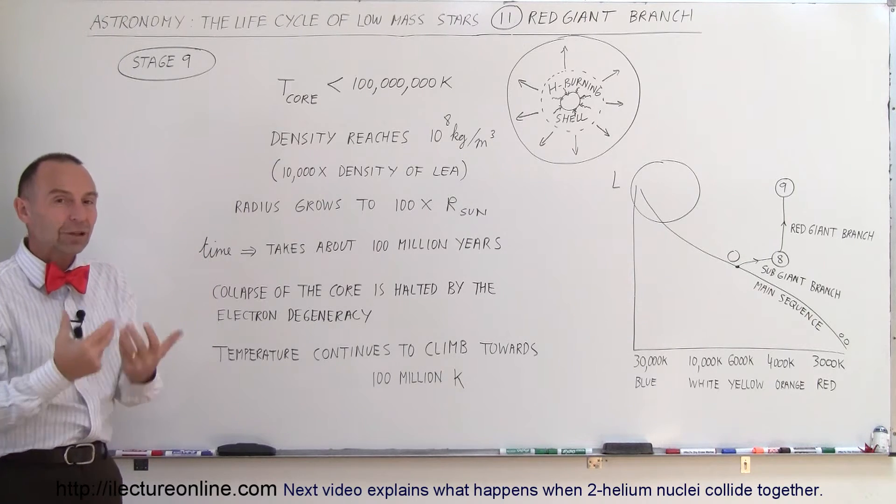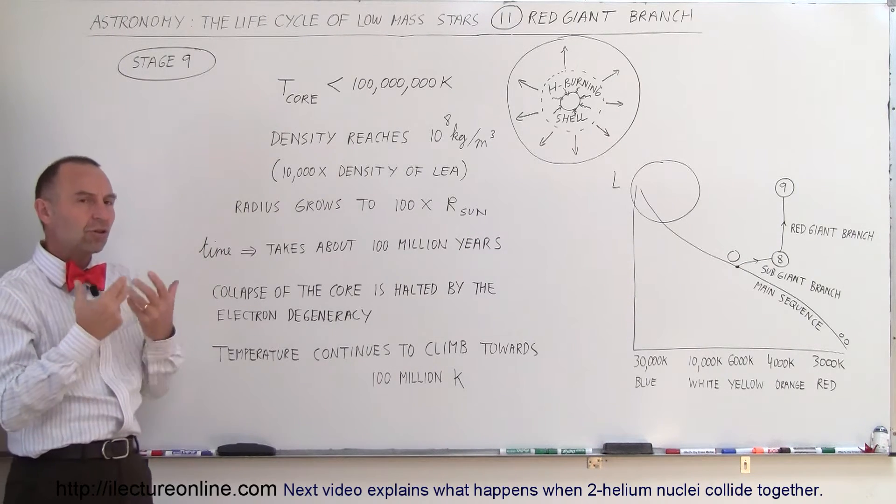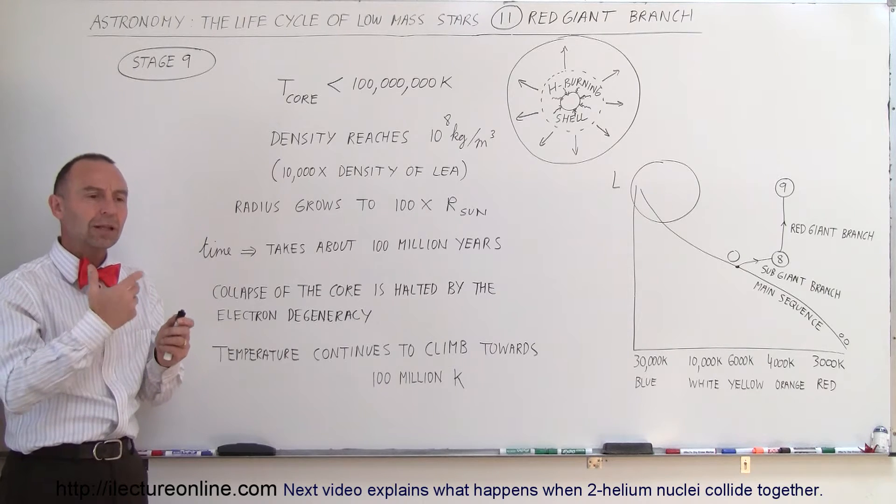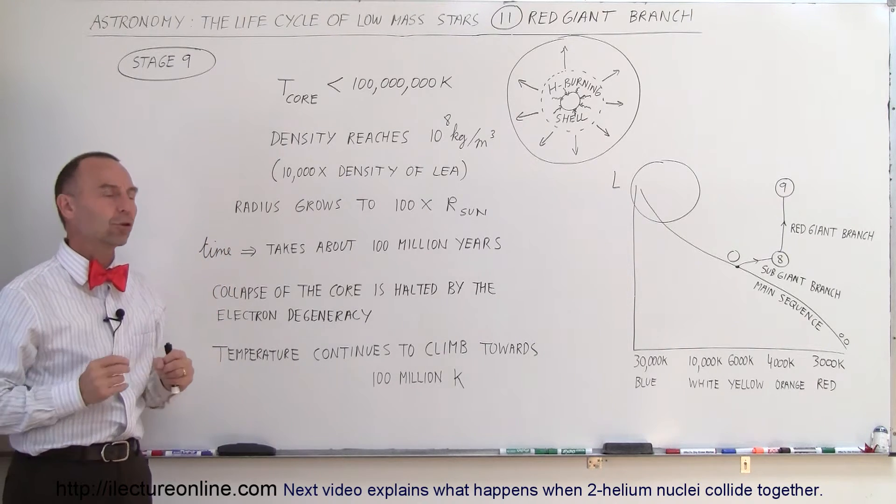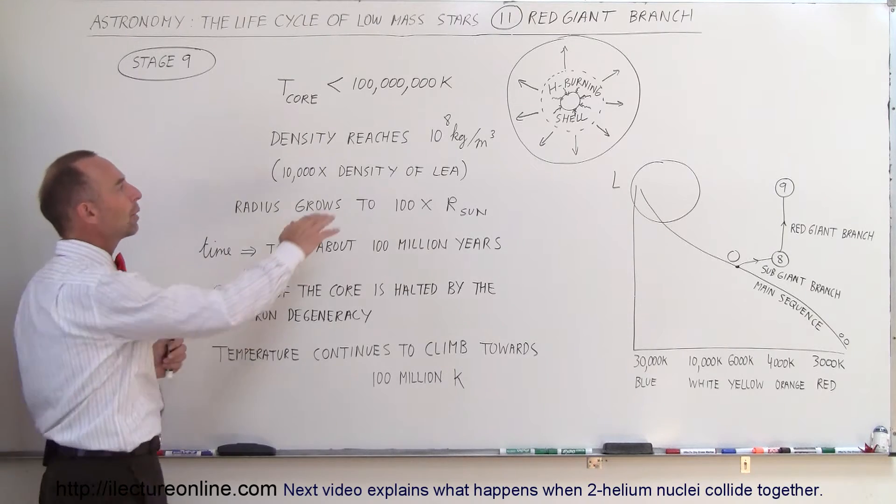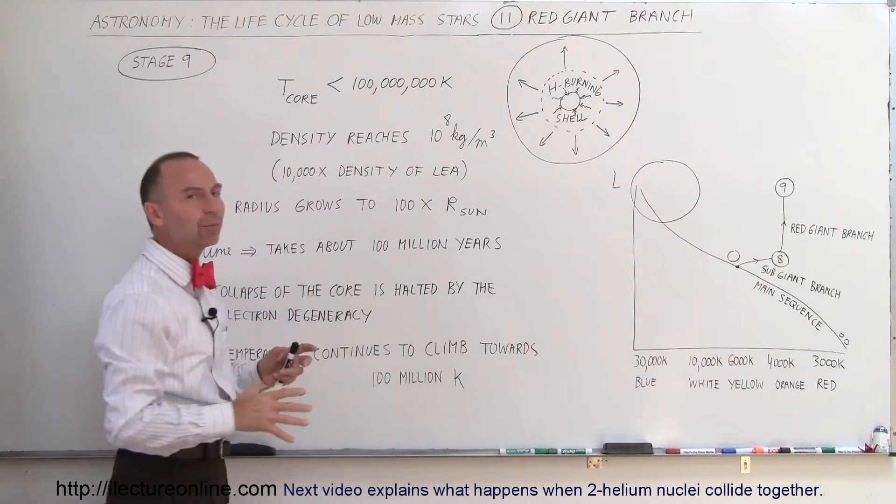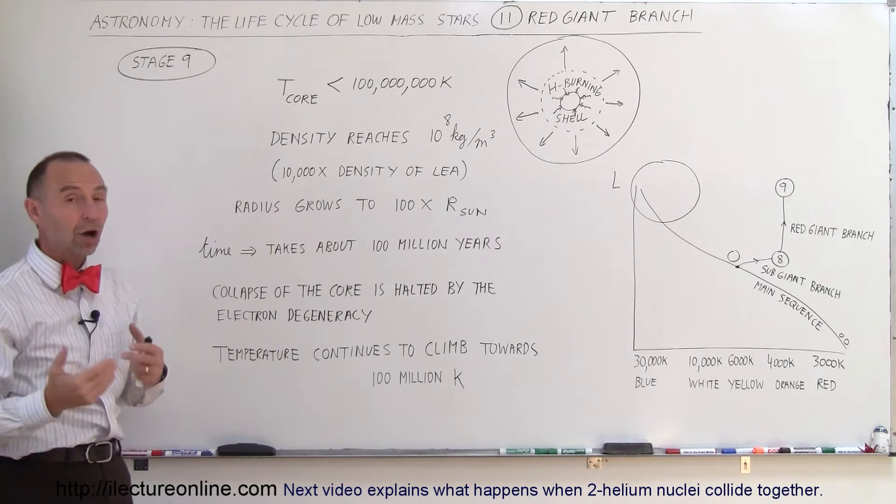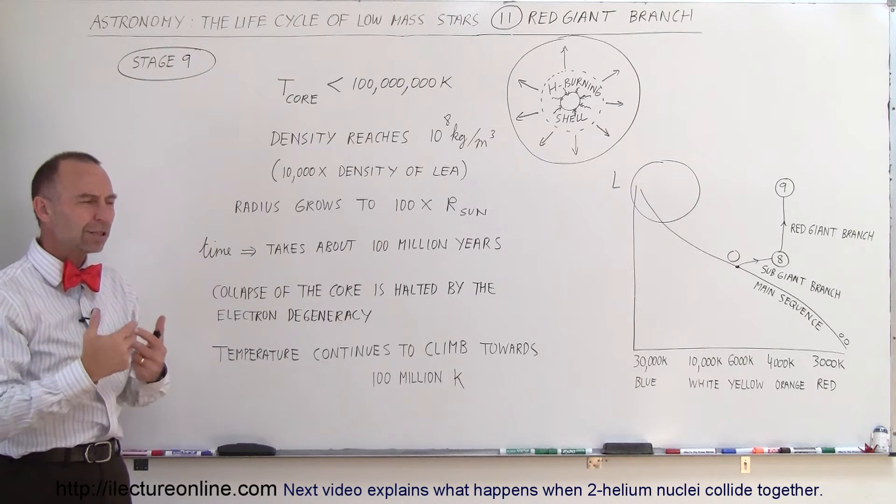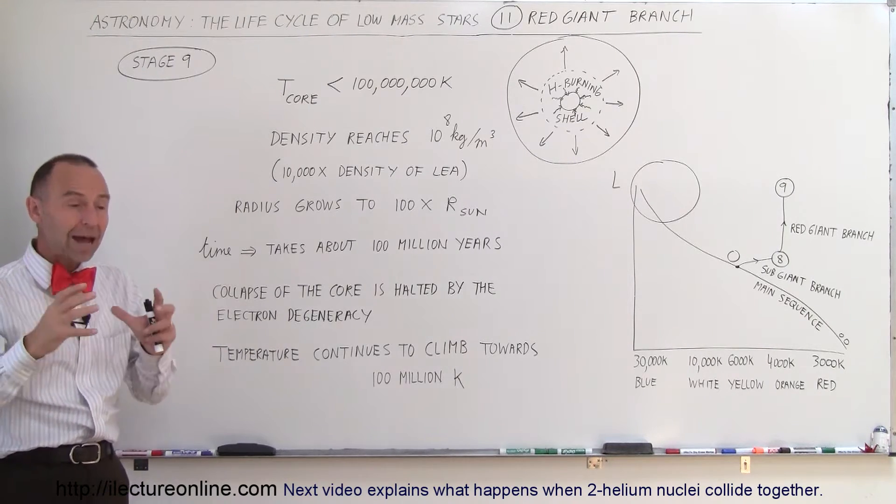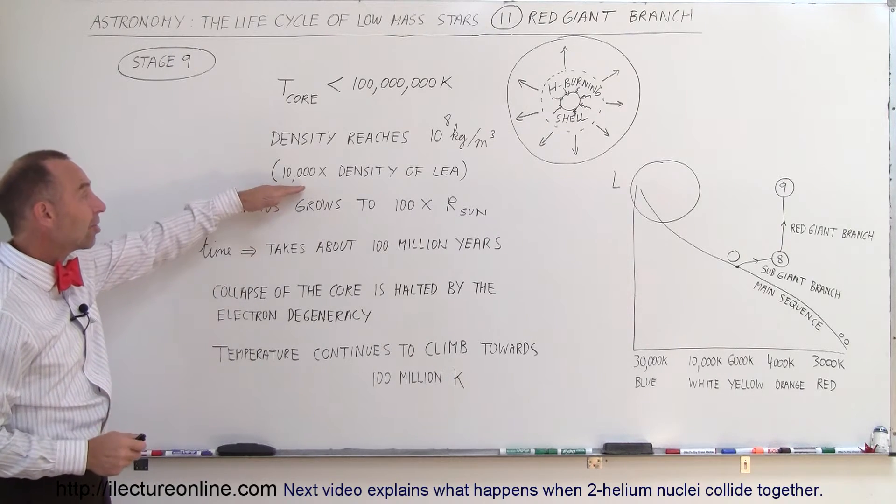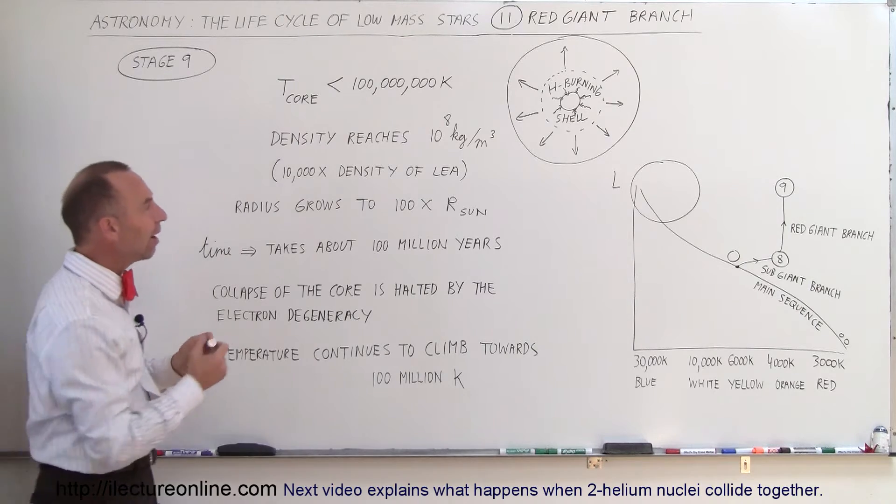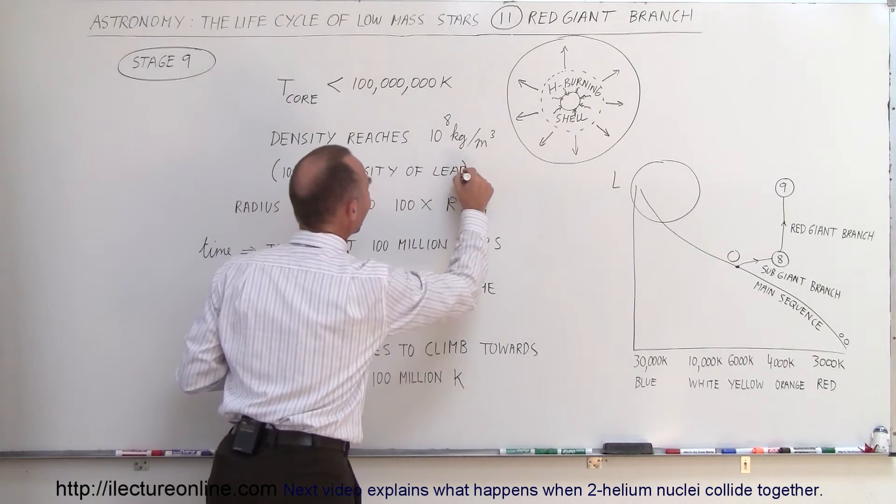And that's what we call the electron degeneracy. The electron degeneracy is those electric repulsive force between the electrons that halted any further collapse of the core. At that point, the core would have reached the density of 10 to the 8 kilograms per cubic meter. That's 100 million kilograms or 200 million pounds per cubic meter. That is about 10,000 times the density of lead.